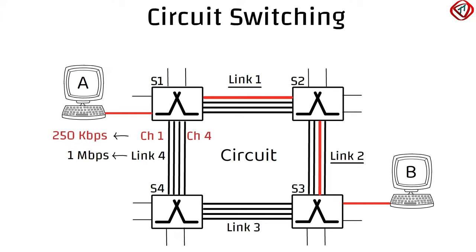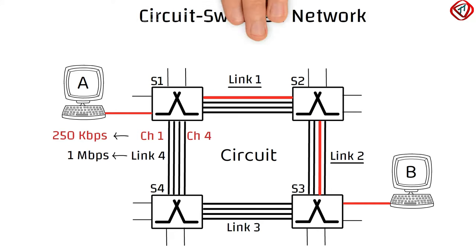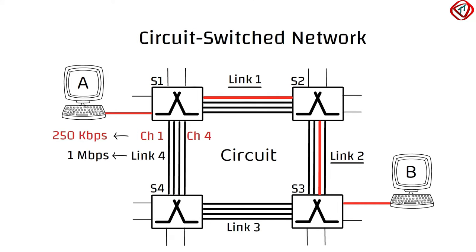Hence, each end-to-end connection gets a dedicated transmission rate of 250 Kbps. Such a network, where sender-to-receiver connection receives a guaranteed constant transmission rate with the help of reserved resources, is called a circuit switched network, and the switches are called circuit switches.